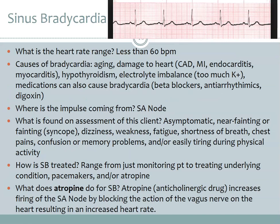Sinus bradycardia means the patient's heart rate is less than 60 beats per minute. Causes include aging, coronary artery disease, MI, infections such as endocarditis or myocarditis, hypothyroidism, electrolyte imbalances, and medications. For example, beta blockers manage blood pressure but also decrease heart rate, potentially dropping it below 60 bpm. Antiarrhythmics and digoxin can also cause bradycardia, so we need to monitor patients on these medications closely. The impulse is still coming from the SA node.